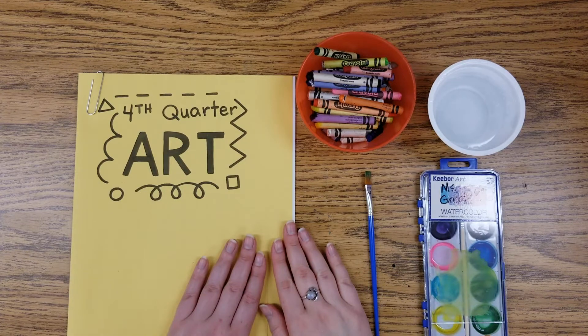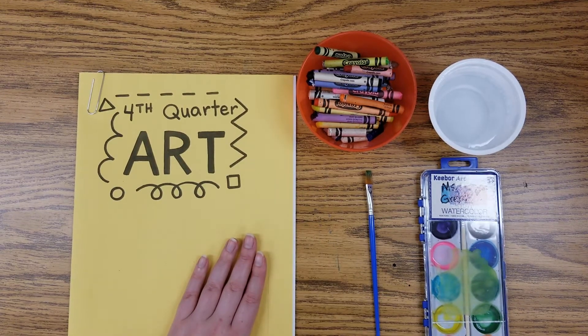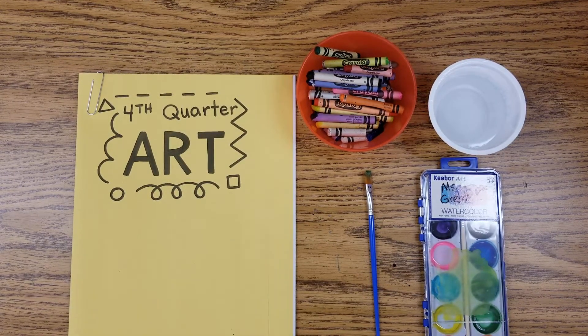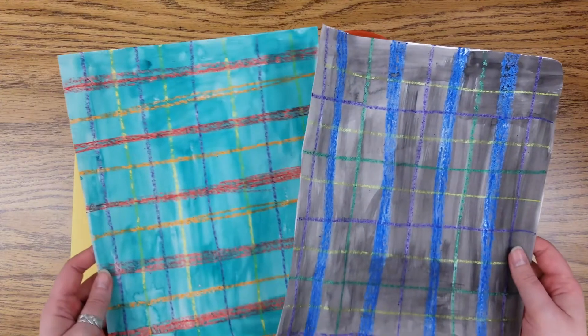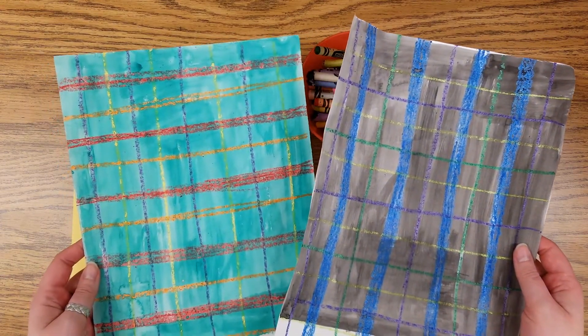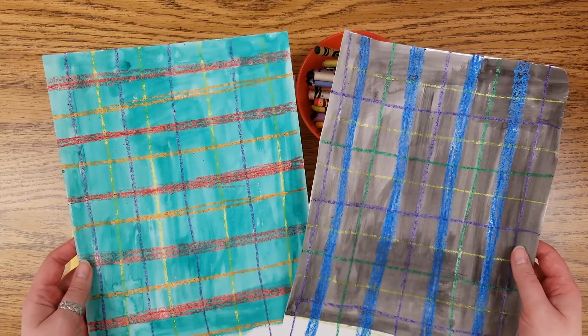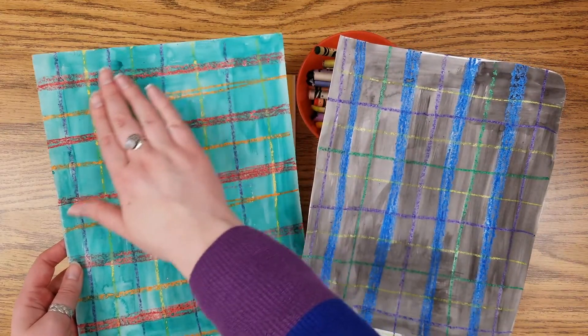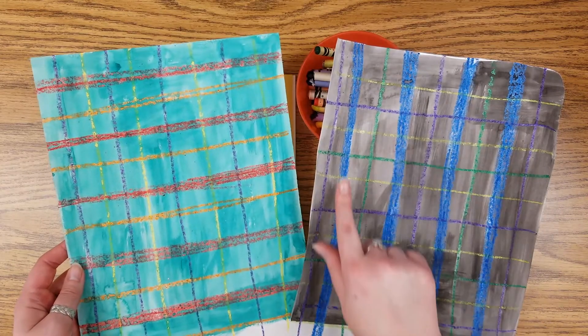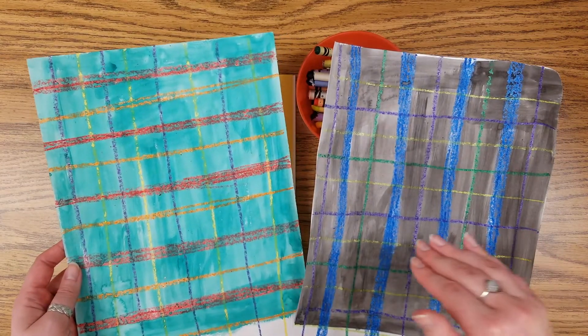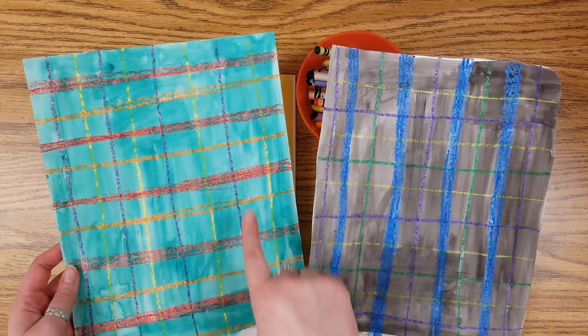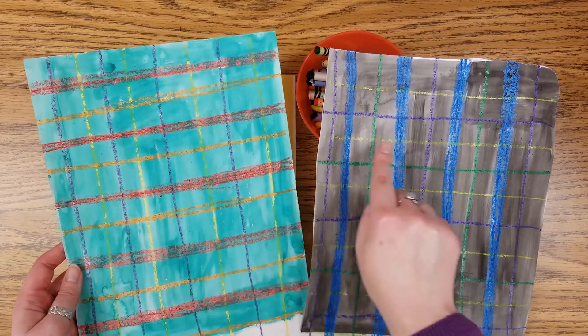So before we get out any paper from our folder, I just wanted to show you a couple examples of what your paper might look like today. Here are two different versions of plaid. Plaid is a type of fabric that has a pattern where the fabric is one color, for instance green here, black there, and then different colors are either woven or sewn into it, such as red, orange, yellow, purple, even blues.